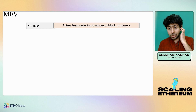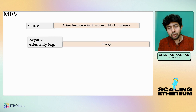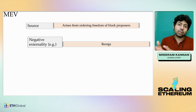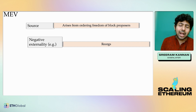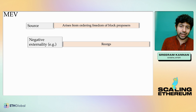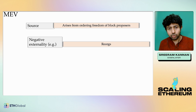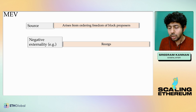This freedom gives rise to both markets as well as some negative externalities. One example of a clearly negative externality is re-orgs. If there's a block proposer and they see some valuable transactions in a previous block, they may want to re-org the chain. This is much easier with Proof-of-Work and more difficult with Proof-of-Stake because there is a certain amount of voting accumulating in, for example, Ethereum today.